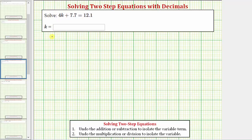We want to solve the equation 4k plus 7.7 equals 12.1. Because 4k means 4 times k, the solution to the equation is the value of k that makes 4 times k plus 7.7 equal to 12.1.